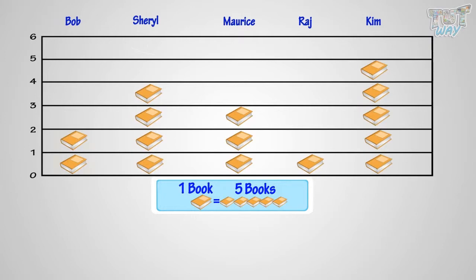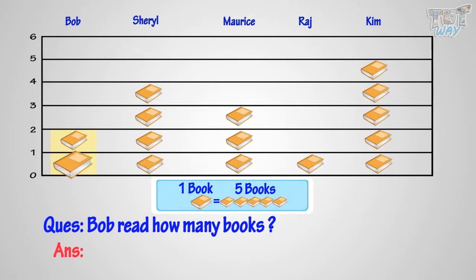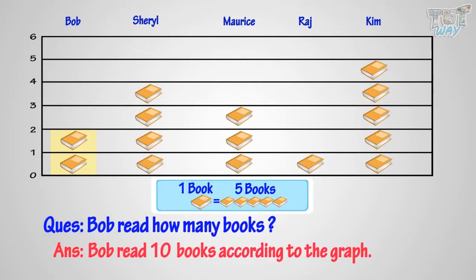Can you tell how many books Bob read? Let's count. There are two book symbols, and one book stands for five books. So, five plus five, or five times two, equals ten. Bob read ten books according to the graph.